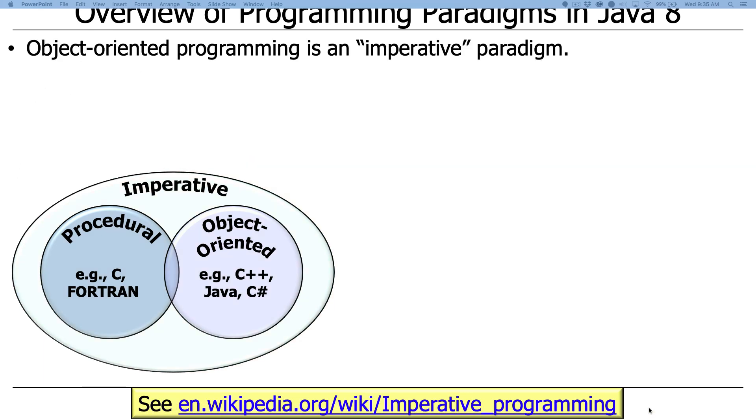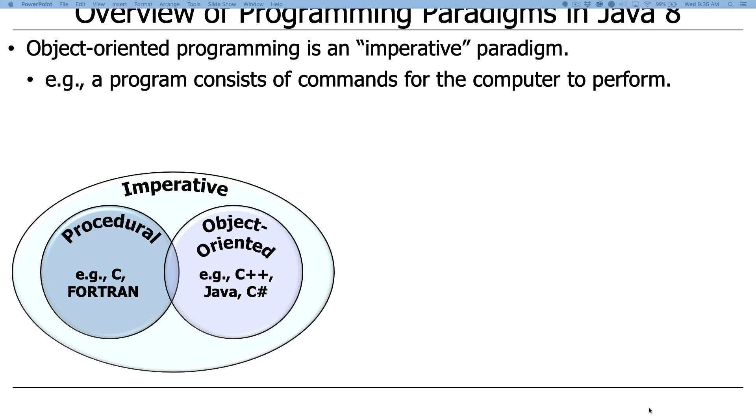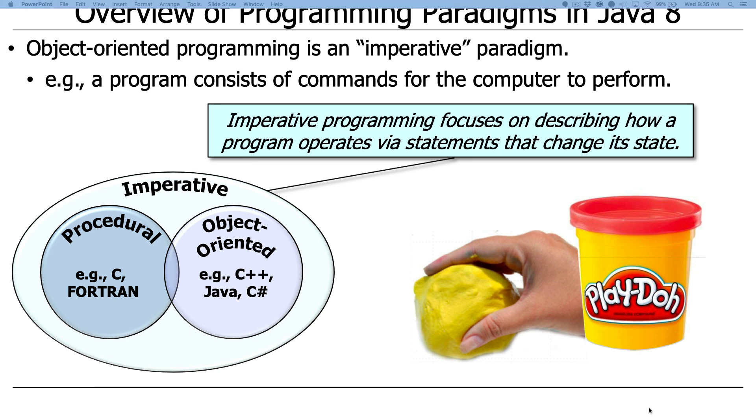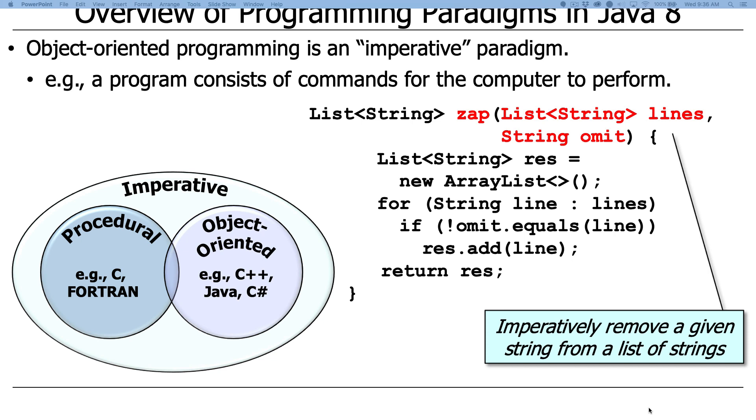So object-oriented programming as a paradigm is a so-called imperative paradigm. What it means is that a program written in an object-oriented style consists of commands that tell the computer what to do. Imperative programming focuses on describing in code how to manipulate the state of the program via various statements. So the whole thing is about mutable state, like Play-Doh. You can reshape it in various forms. Let's take a look at a really simple example to illustrate this. This should be very familiar to you, hopefully, if you've taken 101 or the equivalent.